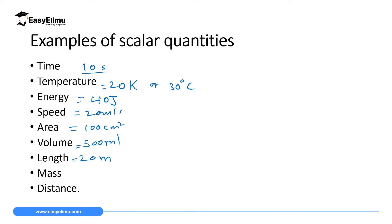It could be either south or north, but you have not mentioned. Mass — if you say 30 kilograms, you have not mentioned the direction. And distance is also like length — no direction mentioned. We call them scalar quantities: quantities which only show magnitude but don't give us the direction.